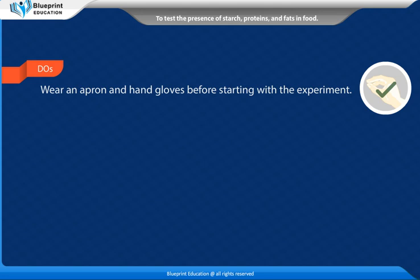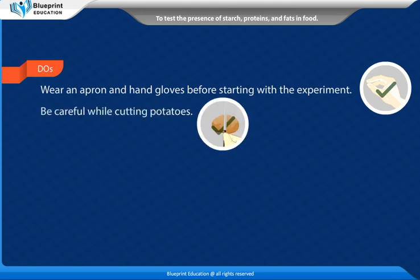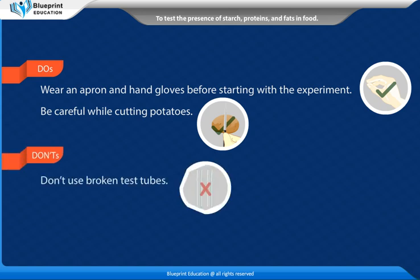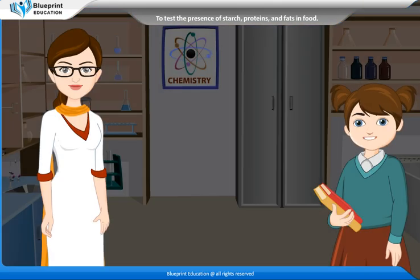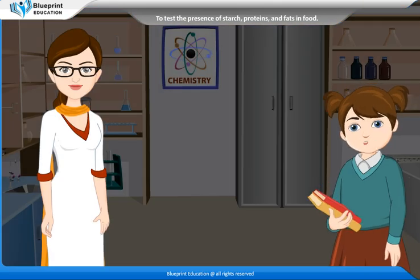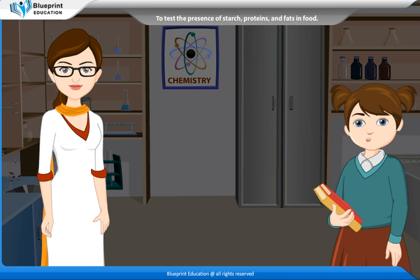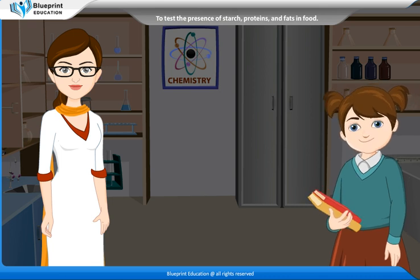Dos: Wear an apron and hand gloves before starting the experiment. Be careful while cutting potatoes. Don'ts: Don't use broken test tubes. Be careful not to spill the chemicals around. Thank you, madam — this experiment has made the concept very easy to understand.